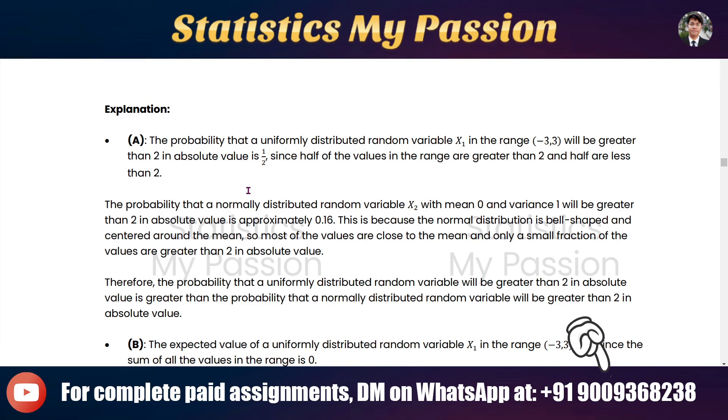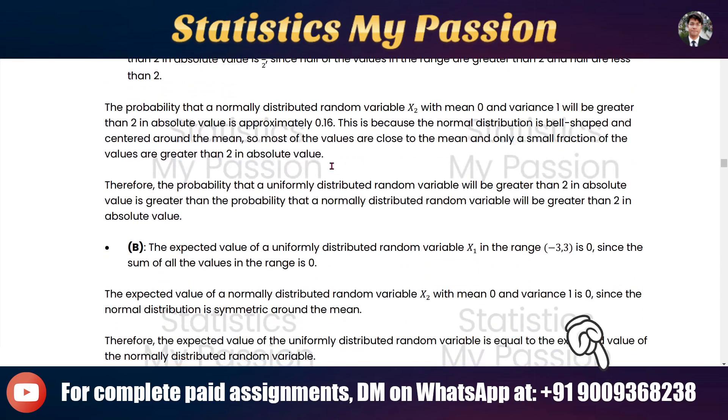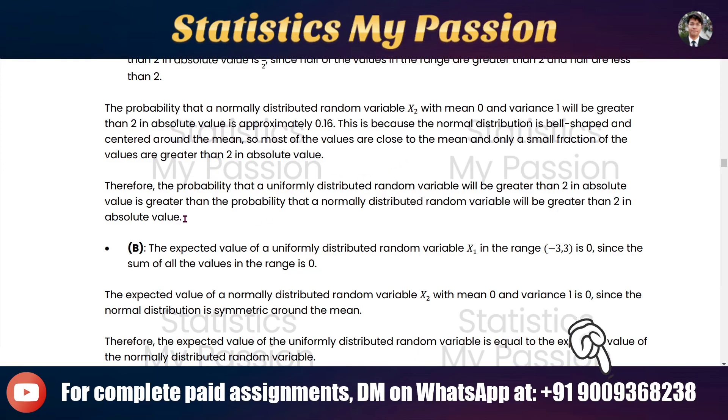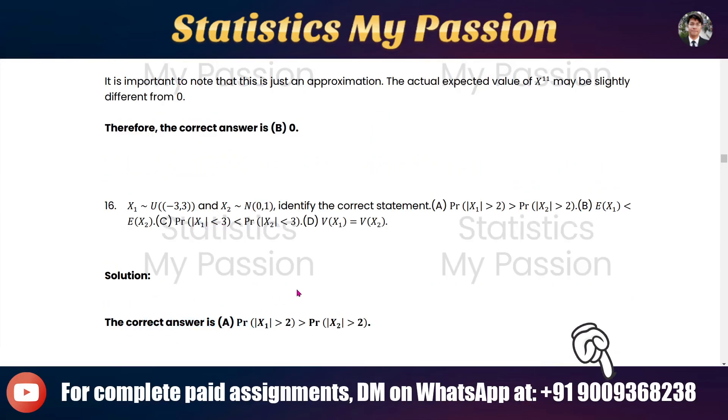The probability that a normally distributed random variable x2 with mean 0 and variance 1 will be greater than 2 in absolute value is approximately 0.16. That's the thing we can say for the correct answer.